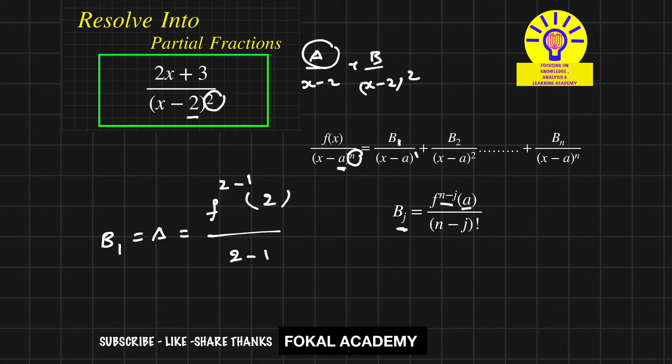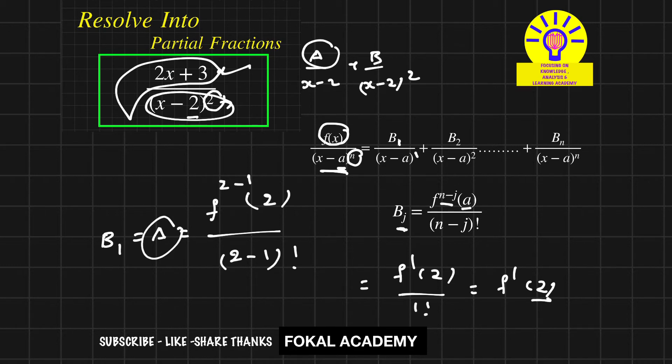This equals f'(2) divided by (2 - 1)! = f'(2) / 1! = f'(2). Here f(x) means remove this term, so the remaining function is f(x). Now differentiate this function and substitute 2 to get the first constant value A. f'(x) equals 2. No need to substitute 2 in this equation because there are no x terms. So the first constant value is A = 2. Therefore 2/(x - 2) plus...